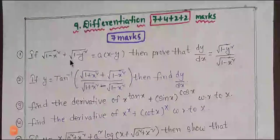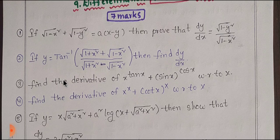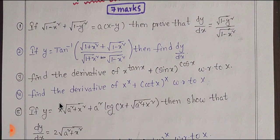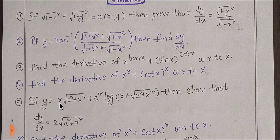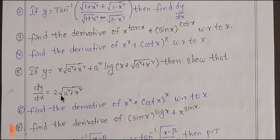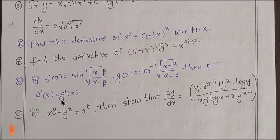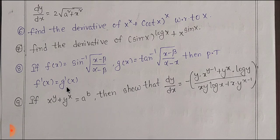Next, I will tell you about differentiation. The marks breakdown for this unit is 7 plus 4 plus 2 plus 2 — that is 15 marks total. You can get 7 marks by covering problems 1 through 9. If you have a few practice papers, you can get a little extra benefit.